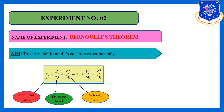This is Bernoulli's equation: z1 plus p1 by rho g plus v1 square by 2g is equal to z2 plus p2 by rho g plus v2 square by 2g. The first term z1 is the potential head, the second term p1 by rho g is the pressure head, and the third term v1 square by 2g is the velocity head.